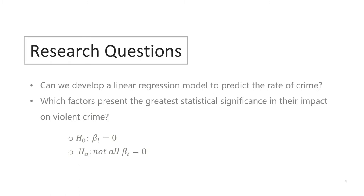The research questions we are going to try to answer today are, can we develop a linear regression model to predict the rate of crime, and which factors present the greatest statistical significance in their impact on violent crime? We will use a global F-test to determine what predictors belong in the model. The null hypothesis will be beta i equals zero, and the alternative hypothesis will be not all beta i is equal to zero.